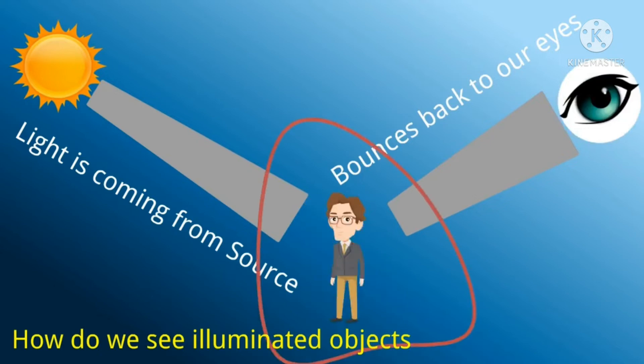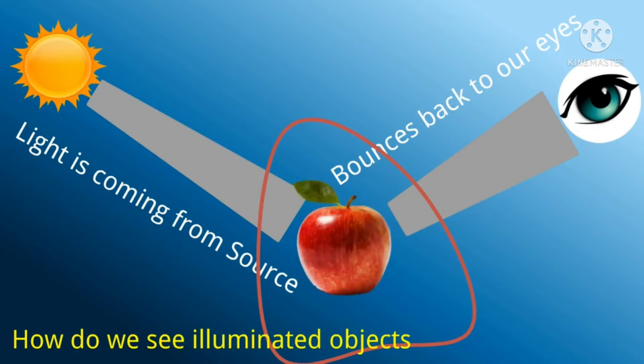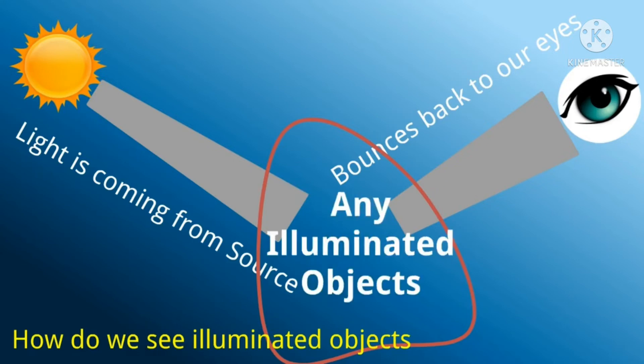From the chair, that light bounces back to our eyes and we can see the chair. In the same way, light is falling on a person and the light bounces back to our eyes, and we can see the person. And if you take a football or an apple — light is falling on the apple and it bounces back to our eye, then we can see the apple. So in that way we see all illuminated objects with the help of light.